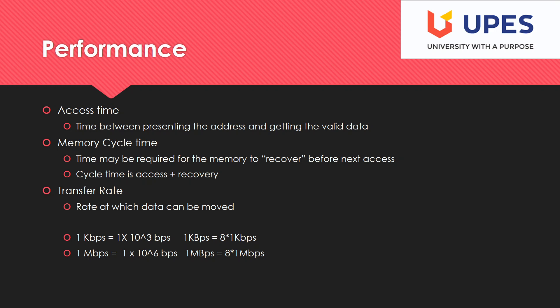If you're talking about big B (bytes), then multiply by eight. So one KBps is eight times one kbps, and one MBps is eight times one mbps.